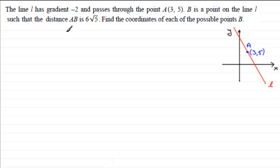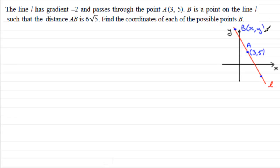We've got a point B where the distance AB is 6 root 5. Root 5 is about 2 and a bit, so 6 times 2 is 12 — so AB is just over 12 units. Looking at the sketch, I can see that B is going to be somewhere up here, and somewhere down here. So we've got B here with coordinates x, y, or it could be a point down here, B with coordinates x, y.